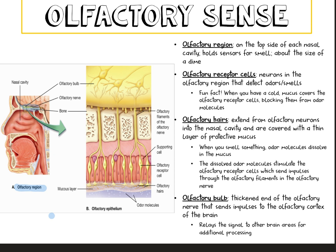The olfactory receptor cells are the neurons in the olfactory region that detect odors and smells. Here's a fun fact: when you have a cold, mucus covers up the olfactory receptor cells and blocks them from the odor molecules, which decreases your sense of smell. You can see how that mucus layer would interfere with the olfactory receptor cells' ability to detect any odors.